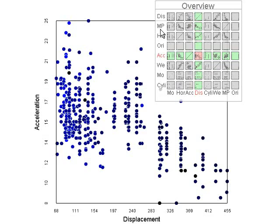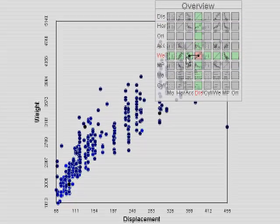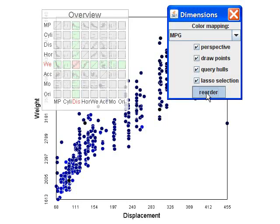Finally, the rows and columns of the matrix can be reordered, either manually using drag and drop, or automatically using the pairwise correlation of the dimensions.